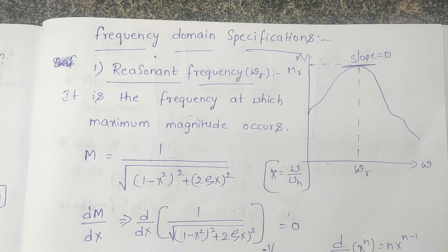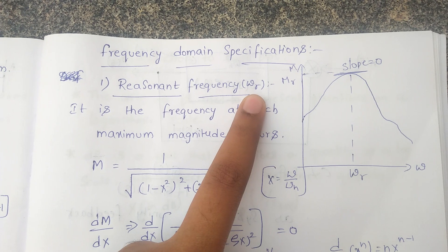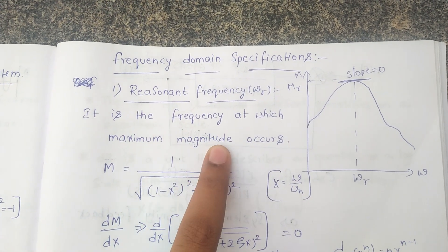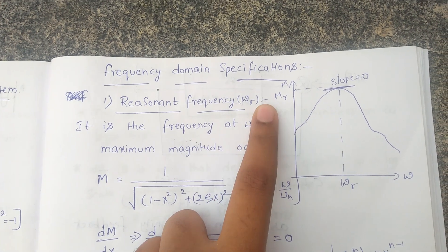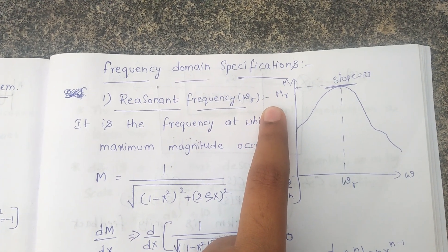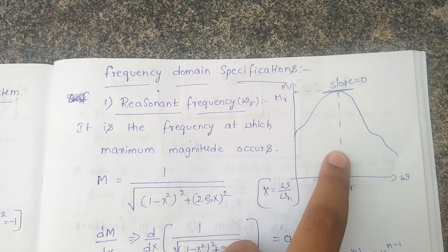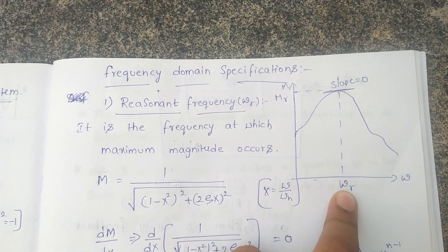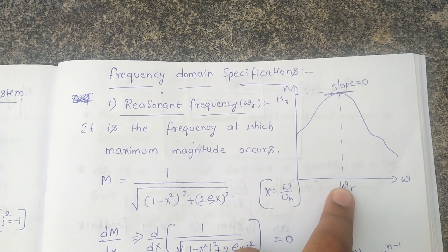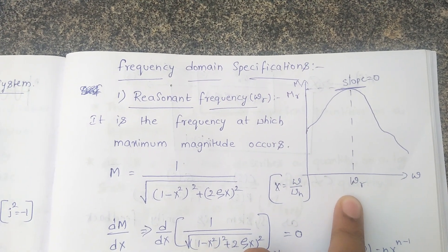Frequency domain specification. The first topic is resonant frequency, indicated by ωr. Definition: it is the frequency at which maximum magnitude occurs. If we draw a graph between angular frequency and magnitude, whenever we get maximum magnitude, the corresponding frequency at that point is called the resonant frequency.